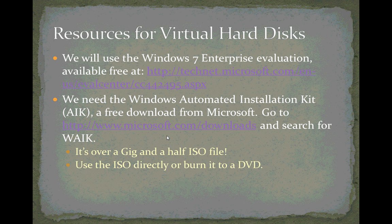We'll be using these resources for working with virtual hard disks. First, the Windows 7 Enterprise Evaluation, which is a free 90-day trial available at the website on screen — you can rearm it up to 180 days. We'll also be using the Windows Automated Installation Kit, another free download from Microsoft.com/downloads — just search for WAIK. It's a large file, about 1.7 gigabytes, and you can use the ISO directly in a virtual machine or burn it to a DVD.